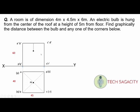The floor level is at 5.5 meters. Now, 5 meters from the floor is where the bulb is located. This is the bulb position in the front view. Now we are going to find graphically the distance between the bulb and any one of the corners below.